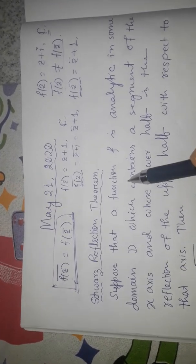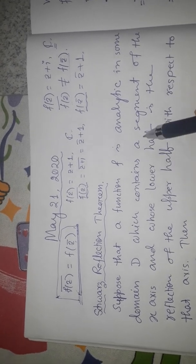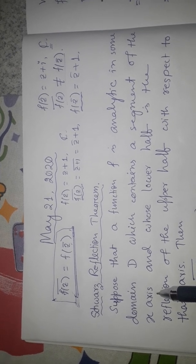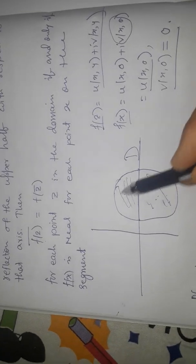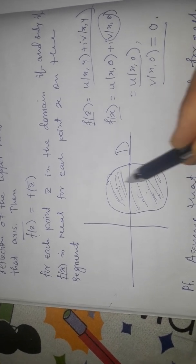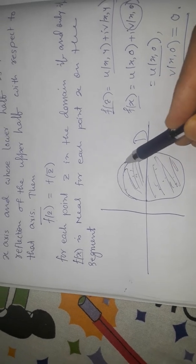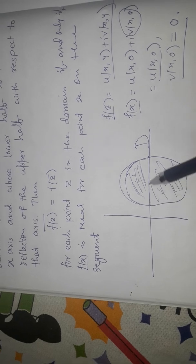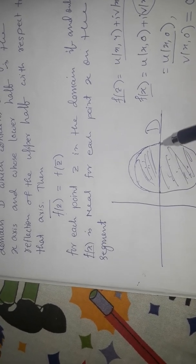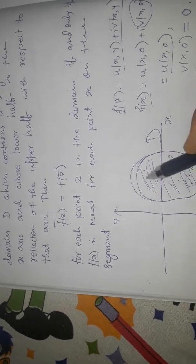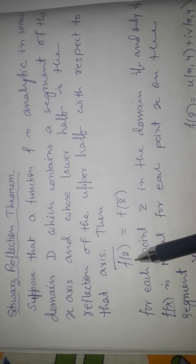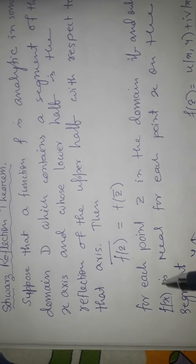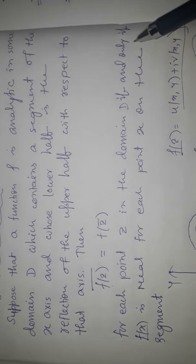The theorem states: suppose a function f is analytic in some domain D which contains a segment of the x-axis, and whose lower half is the reflection of the upper half with respect to that axis. The domain contains a segment of the real axis. Then the condition — that the conjugate of f(z) equals f(z-conjugate) — is satisfied for each point z in D if and only if f(x) is real for each point x on that segment.